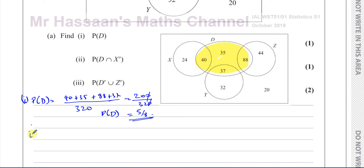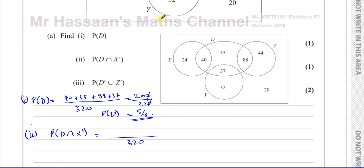Then it says part 2: the probability of D intersection X complement. So again it's going to be over 320. Now, D intersection X complement — if we think about that region, it's going to be D intersection X complement. So you've got D and X. What this means is it must be in D, but it can't be inside X. It has to be in D, and at the same time, outside of X.